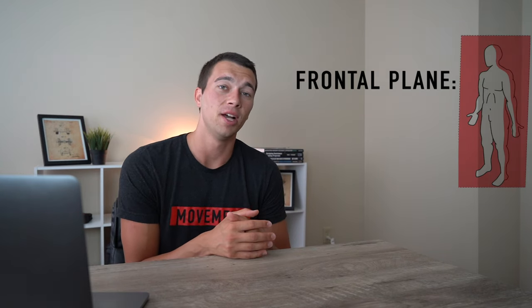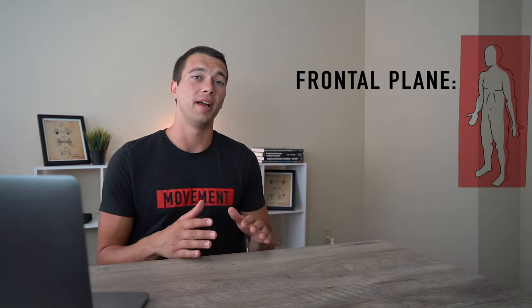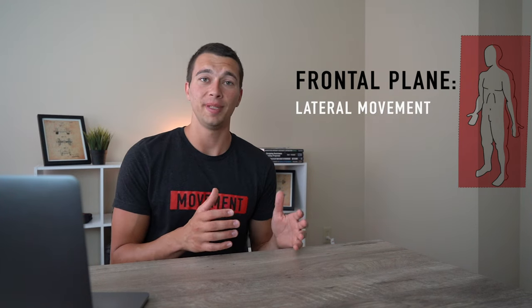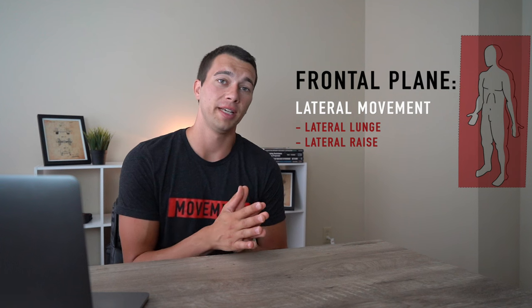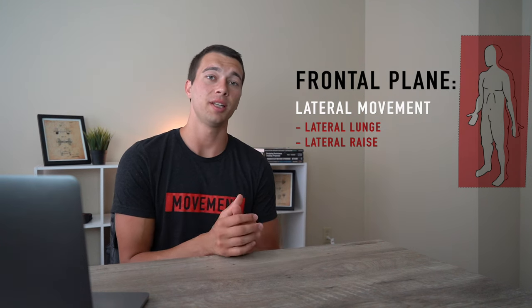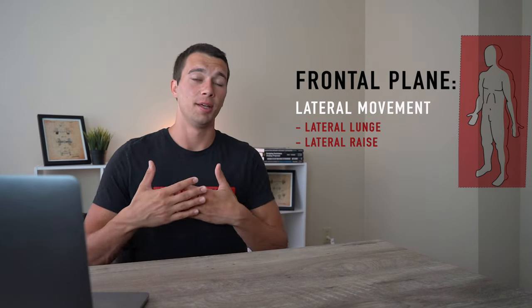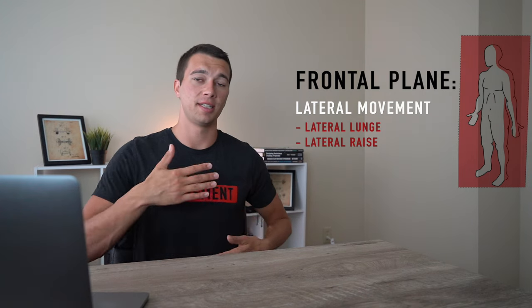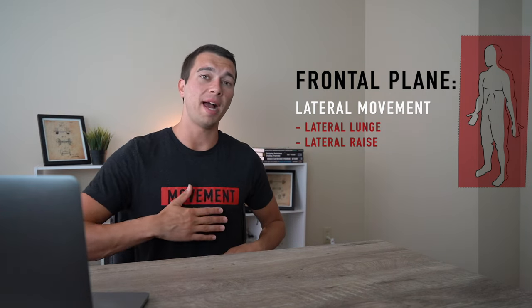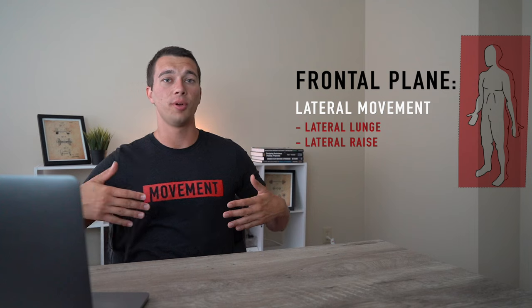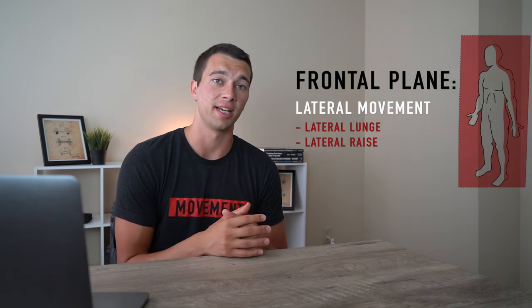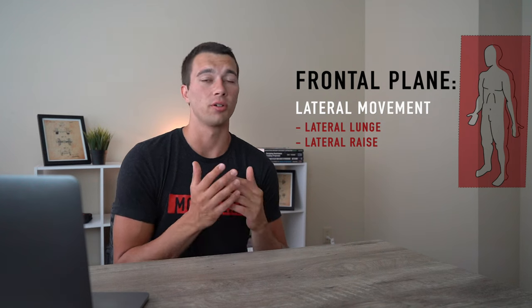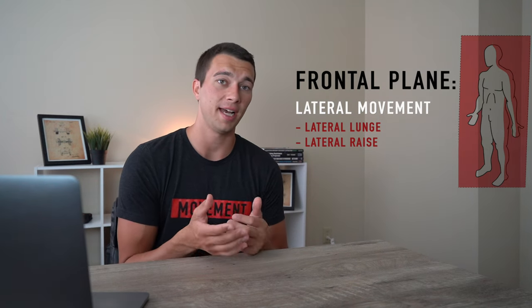Moving on to the frontal plane — exercises in the frontal plane are things that would hit the wall if you were in a narrow hallway. Anything that's a lateral movement, such as a lateral lunge or a lateral raise, would be a frontal plane exercise. As you do a lateral lunge you're stepping to the side; the plane of motion cutting your body into a forward and backward half is the plane your movement is going in. By contrast, a forward or reverse lunge would be a sagittal plane exercise.